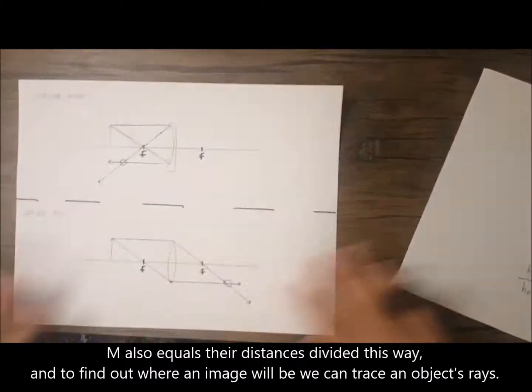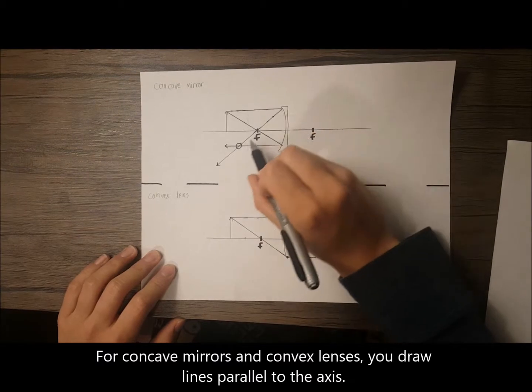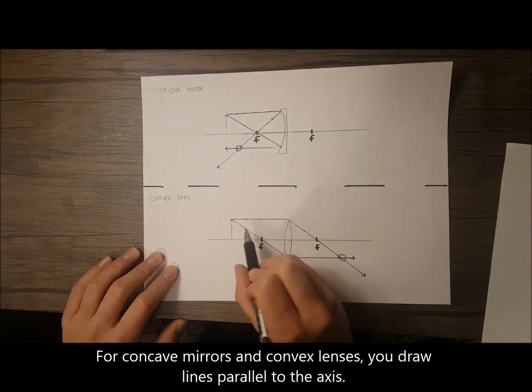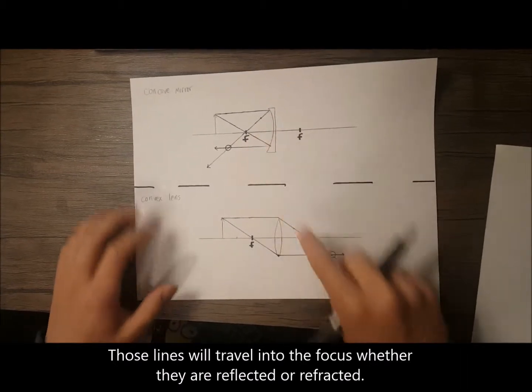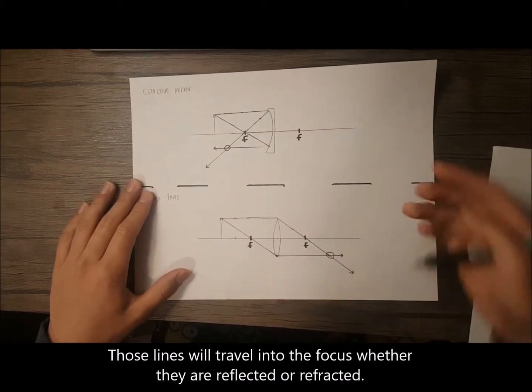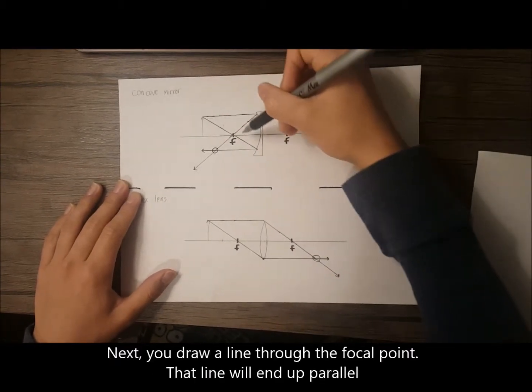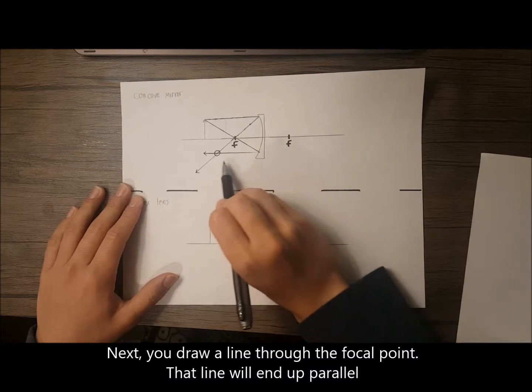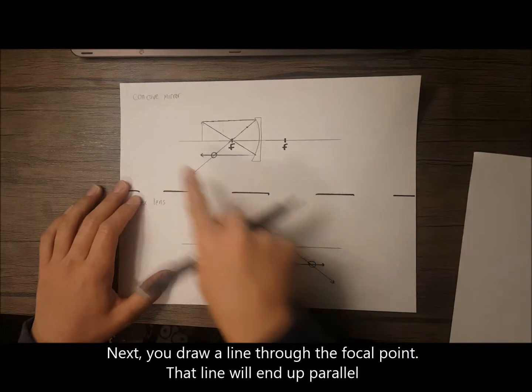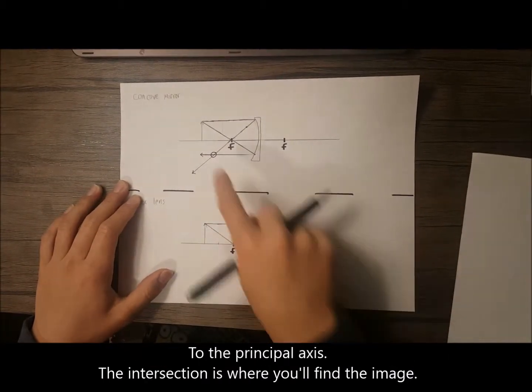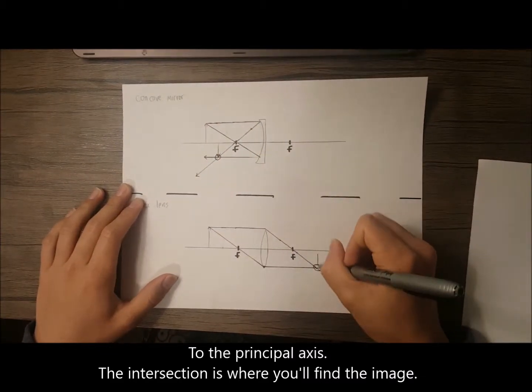And to find out where an image will be, we can trace an object's rays. For concave mirrors and convex lenses, you draw lines parallel to the axis. Those lines will travel into the focus, whether they are reflected or refracted. Next you draw a line through the focal point. That line will end up parallel to the principal axis. The intersection is where you'll find the image.